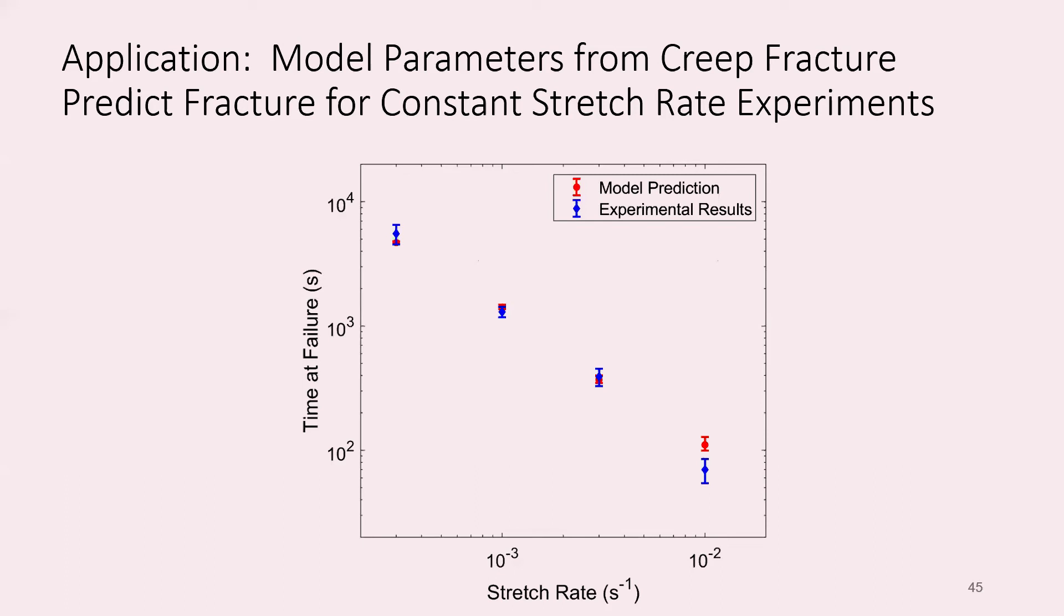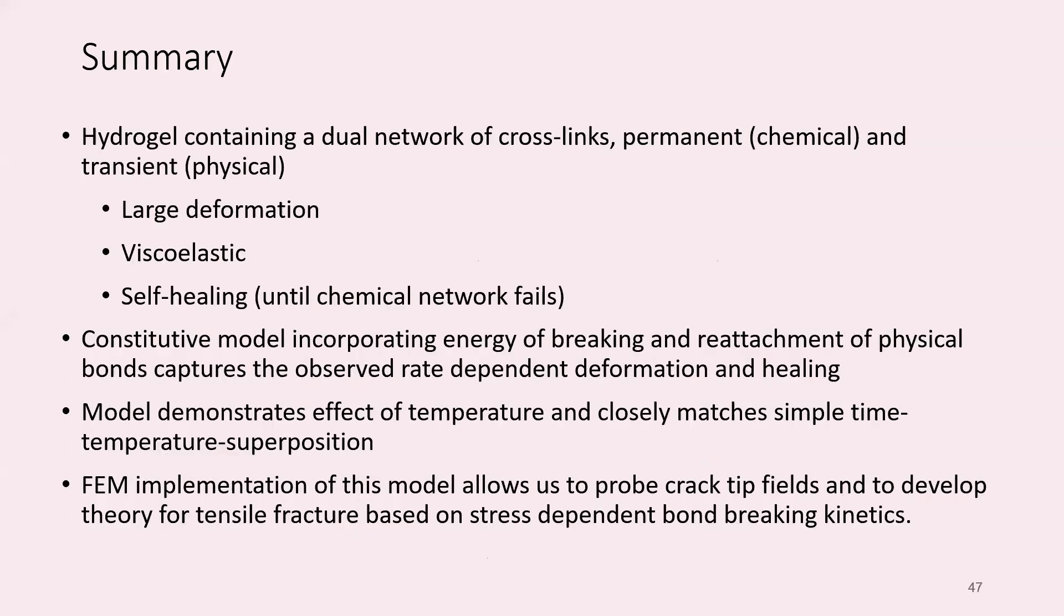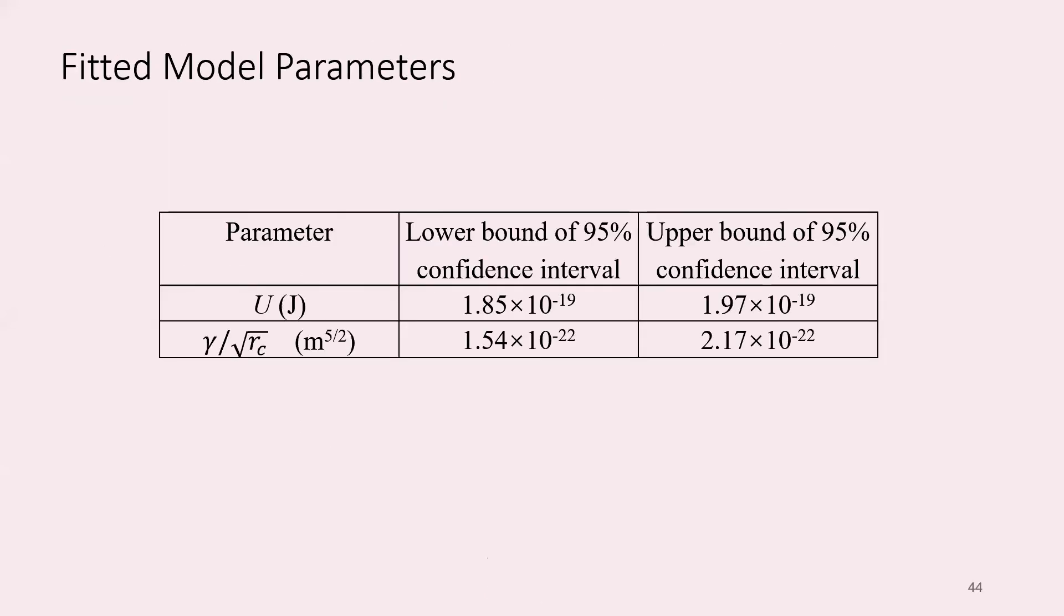It's hard to ascribe a lot of physical meaning to these model parameters. But if you take that gamma over square root of R_C, you can deduce a length scale in the order of nanometers. If you turn that energy into joules per mole, it looks a lot like the activation energy you would see from many other polymers, which makes sense. This is a polymer after all. This is basically representing the energy of failure for those polymer chains.